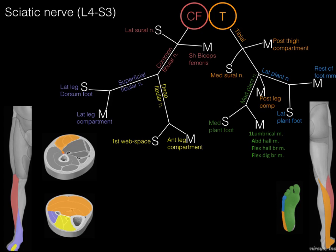So there you have every branch. The tibial nerve arises from L4 to S3 ventral rami, whereas the common fibular nerve only has branches from the L4 to S2 levels.